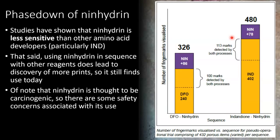So why is ninhydrin being phased down? Multiple studies have shown that ninhydrin is a less sensitive reagent than some other fingerprint amino acid-targeting chemicals, particularly indanedione, which is the state-of-the-art spray used instead of ninhydrin. That said, ninhydrin is still used in sequence with other reagents because this leads to the discovery of more fingerprints overall. For example, with the reagent DFO as a first step, 240 fingerprints were generated; applying ninhydrin afterwards yielded an additional 86 fingerprints. Indanedione generated 402 fingerprints, but applying ninhydrin afterwards added a further 78 fingerprints. So there's still value to applying ninhydrin after the first round of visualisation with the better reagents.